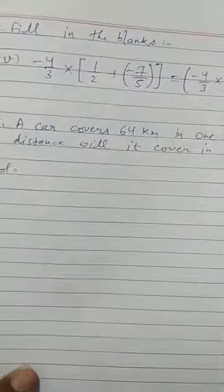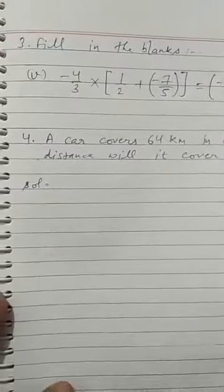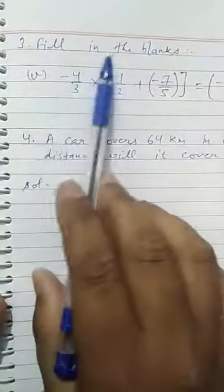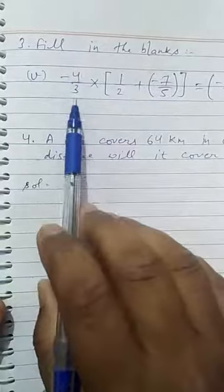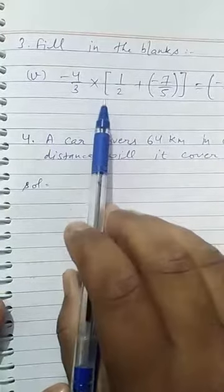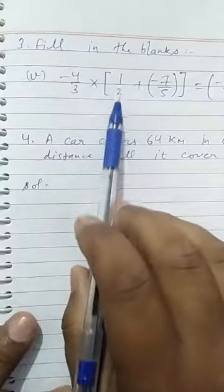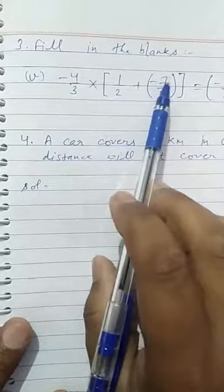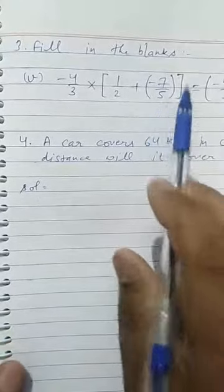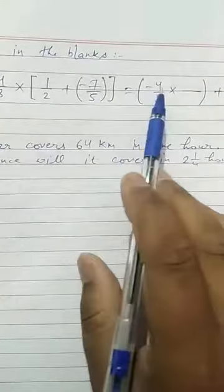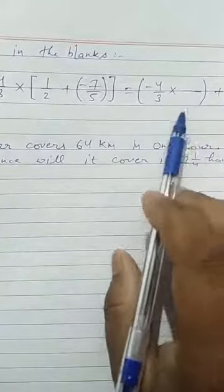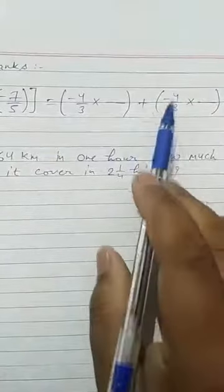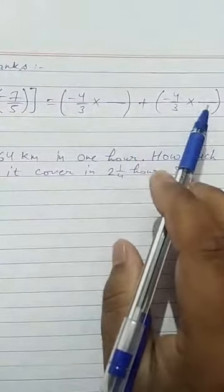Don't leave any part, okay, it gives you practice. Number 3 is fill in the blanks. I'm taking fifth part: minus 4 upon 3 multiply by square bracket start 1 upon 2 plus minus 7 upon 5 bracket close again square bracket close equal to minus 4 upon 3 multiply by dash bracket close plus minus 4 upon 3 multiply by dash.